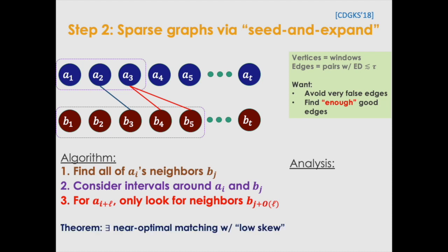And you can make this precise that there exists a near-optimal matching with what's known as low skew, that no pair of edges is ever going to diverge too much from each other. For instance, the edge a3bt is irrelevant.